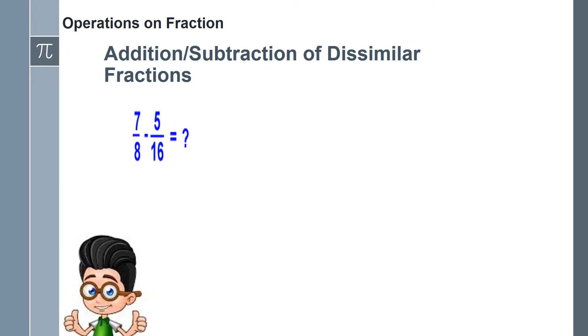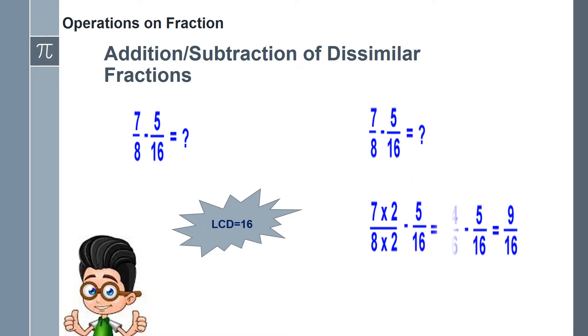Next example, 7 over 8 minus 5 over 16. In this example, we can determine that the LCD of the 2 is 16. So we are going to express 7 over 8 to higher terms in which its denominator will be the LCD. To make it, we multiply it by 2 over 2. Then we can proceed to the operation, as you can see in the solution.